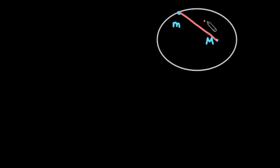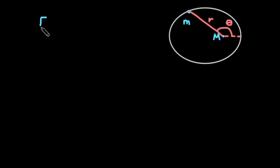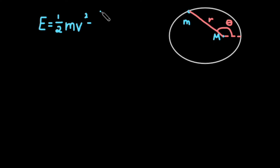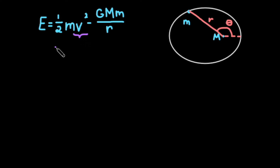Now let's prove this by referring to some other well-known physical laws. The total energy of an orbit is equal to the kinetic energy — one-half mass times velocity squared — plus the potential energy: negative of the gravitational constant times the two masses divided by the distance.